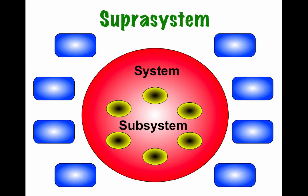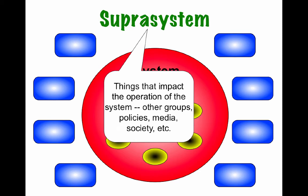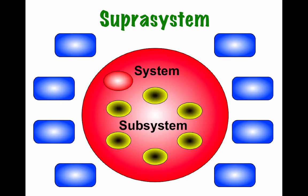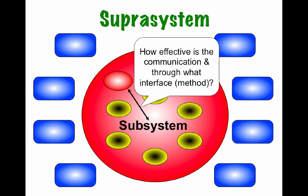Next is our super-system — these are things that impact the operation of the system, such as other groups, policies, media, society, etc. It's also important to use communication lines — this is how effective the communication is and through what interface or method is used. You can have thin two-way lines, broken lines for less communication, or even one-way lines to show that there's not much communication and usually only one way.